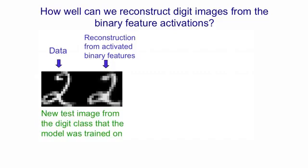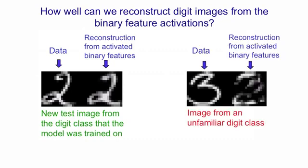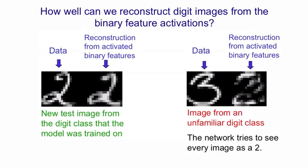A more interesting thing we can do is give it a test example from a different digit class. So if we give it an example of a three to reconstruct, what it reconstructs actually looks more like a two than like a three. All of the feature detectors it's learned are good for representing twos, but it doesn't have feature detectors for things like representing that cusp in the middle of the three. So it ends up reconstructing something that obeys the regularities of a two better than it obeys the regularities of a three. In fact, the network tries to see everything as a two.